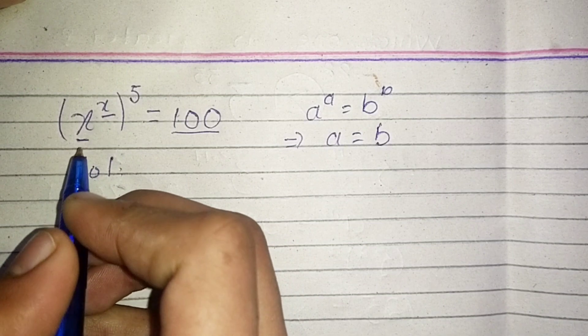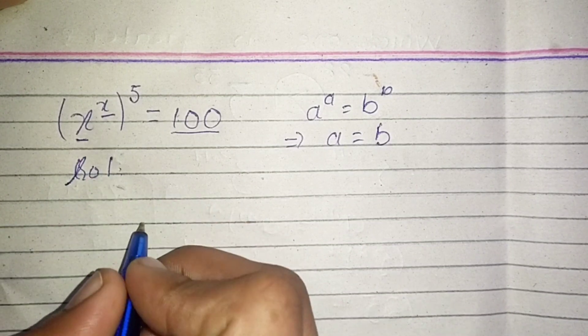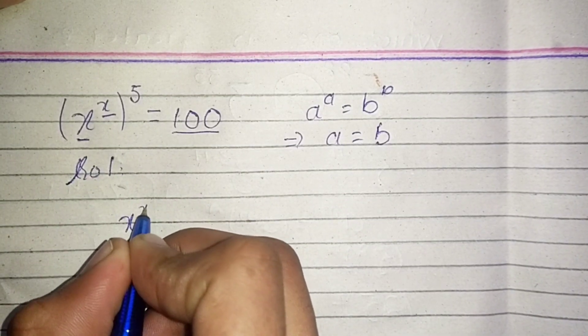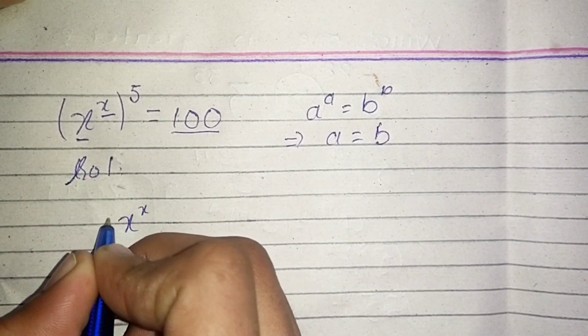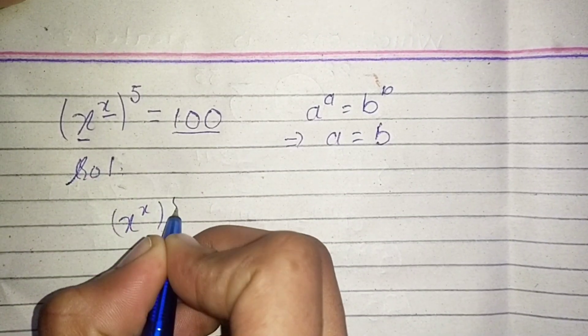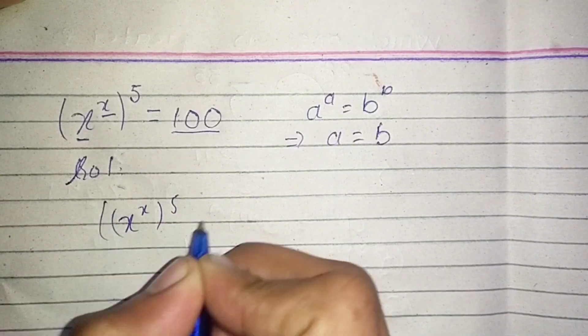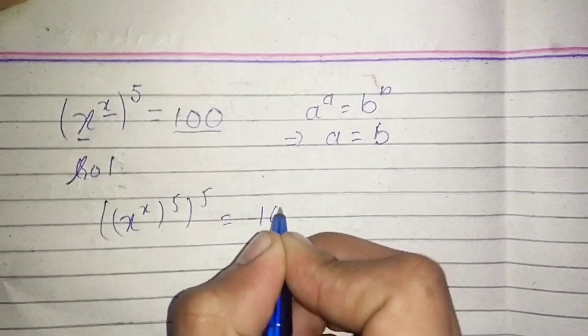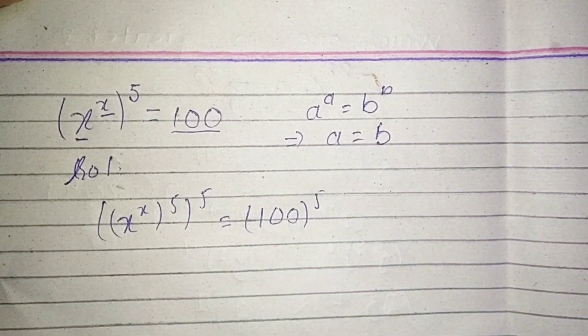In the first step we take the 5th power on both sides, so it will become ((x^x)^5)^5 = 100^5.